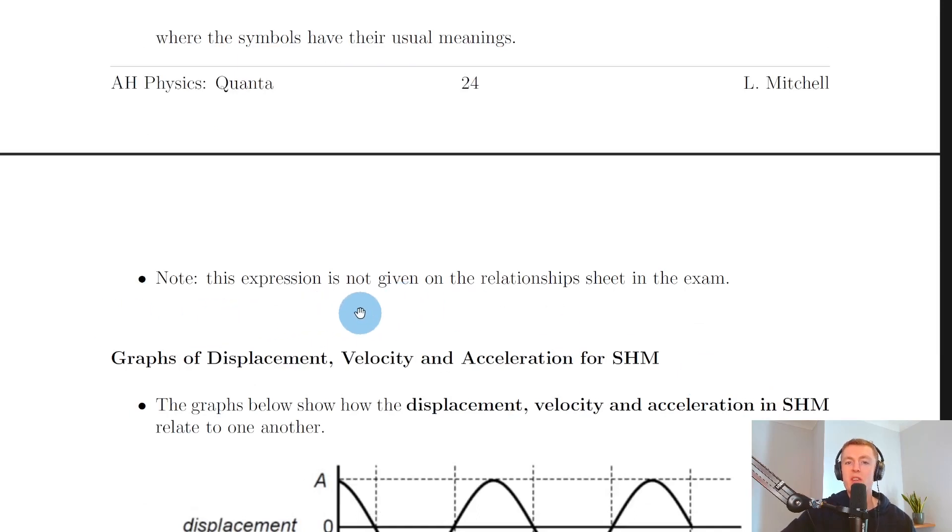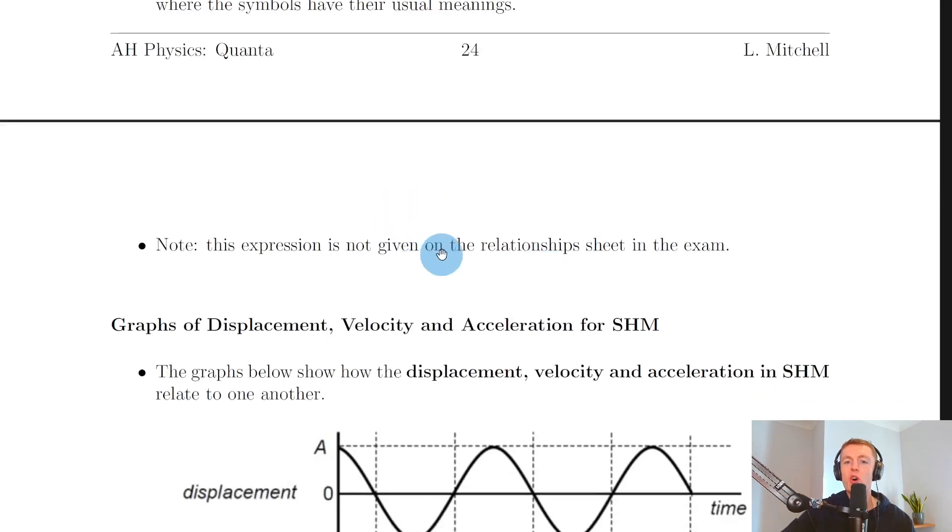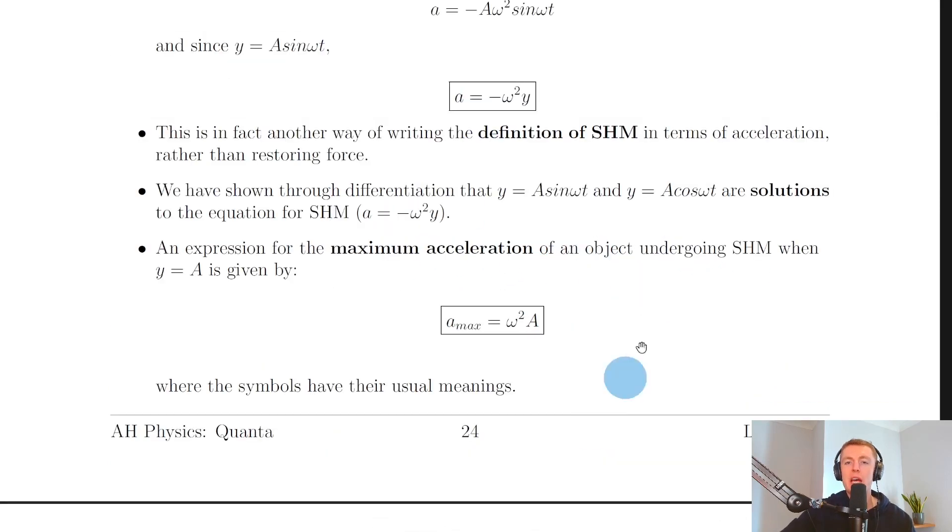And lastly, you should note that this expression for maximum acceleration, a max equals omega squared a, is not given on the relationship sheet in the exam. However, this general acceleration equation is. So a equals minus omega squared y.